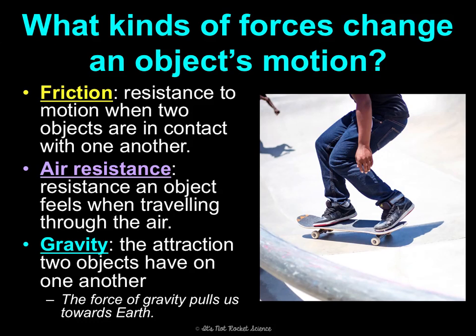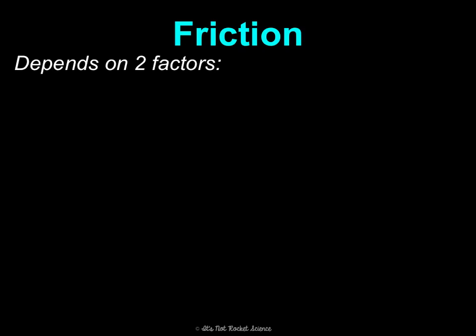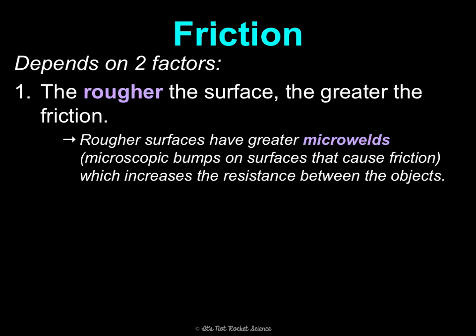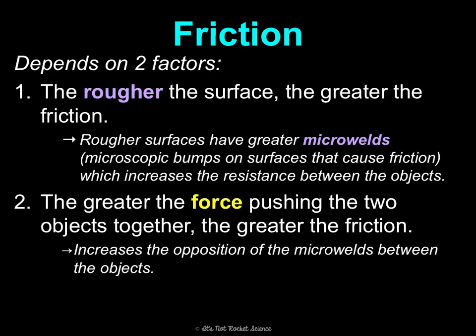Friction depends on two things. First, the roughness of the surface — the rougher the surface, the greater the friction. This is because rougher surfaces have greater micro welds, which are microscopic bumps on surfaces that cause friction and increase resistance between objects. You can see micro welds in carpet easily; a tile floor may appear smooth but at a microscopic level it's not. Second, the greater the force pushing the two objects together, the greater the friction, because there's more opposition in those micro welds.